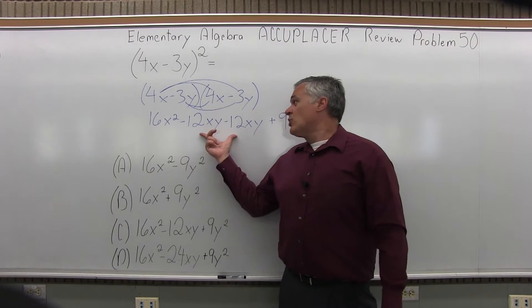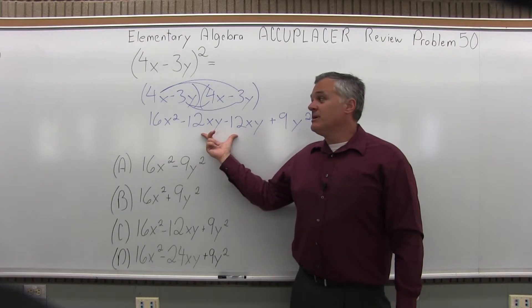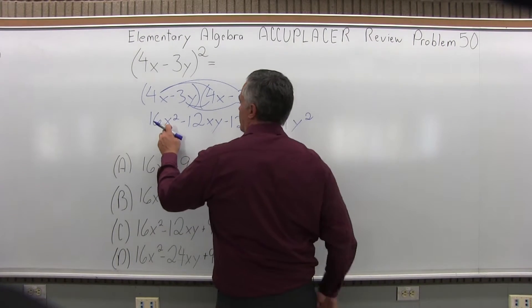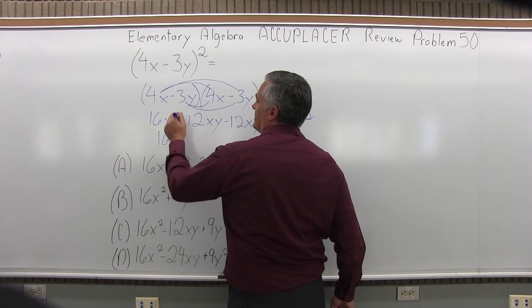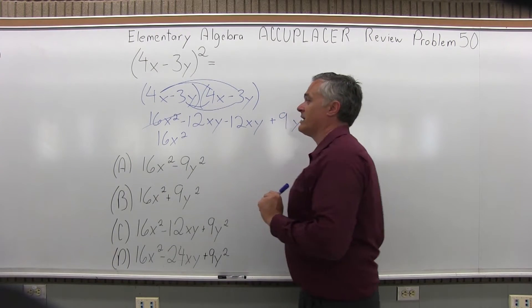Now, the 2 minus 12xy's in the middle can be combined. The 16x squared, there are no other x squares to combine with. So 16x squared is done in terms of what's going in the answer for x squares.